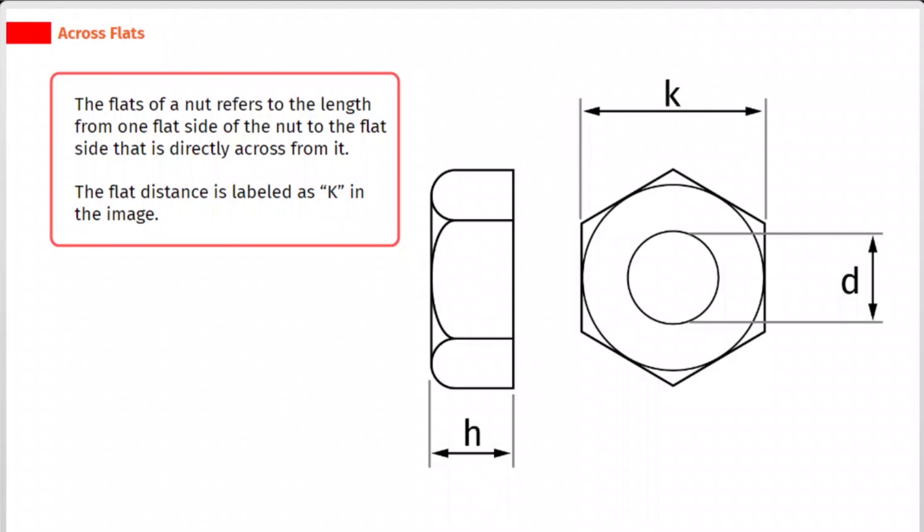The flats of a nut refers to the length from one flat side of the nut to the flat side that is directly across from it. The flat distance is labeled as K in the image.